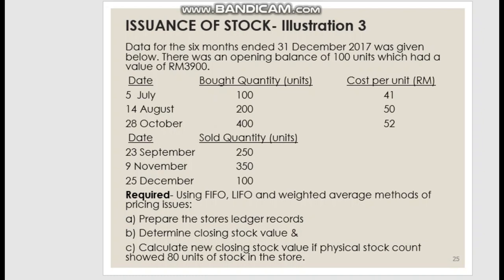We continue with Illustration 3 for the FIFO method. If you already read the slide, this is the data for the 6 months ending 31st December 2017. There is an opening balance of 100 units and a value of 3900.